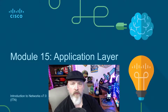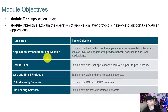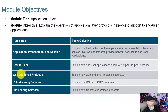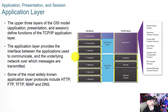Welcome to the Intro to Networks version 7 for the Cisco Networking Academy. This is module 15: Application Layer. In module 15 we're going to look at application, presentation, and session, peer-to-peer, web and email protocols, IP addressing services, and file sharing services.